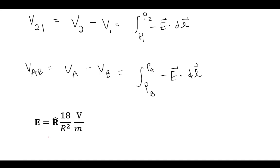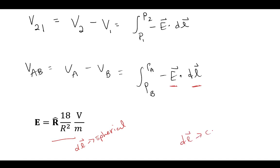When applying this formula, you need to know the field and also the differential length. Our field is given here in spherical coordinates. So if we use this field as is, our DL would be in spherical. However, if we convert the field, then our DL would be better expressed in Cartesian coordinates. We're going to look at which approach might be better for us.